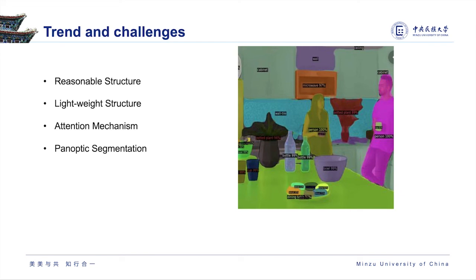As an important application area for semantic segmentation, autonomous driving needs to process the environment, including buildings, ground, sky, trees, cars, traffic signs, and more. The background is processed using semantic segmentation, while individual scene elements must be labeled using instance segmentation. Panoptic segmentation combines semantic segmentation of the background and instance segmentation of the scenes, and this is a recent trend in the field.